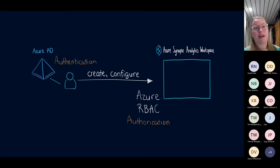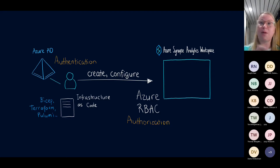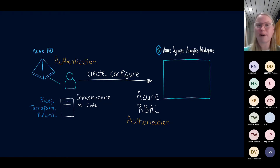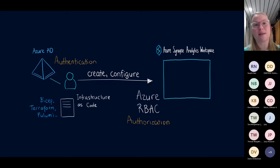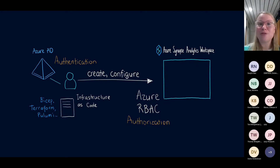The same principles apply if we use infrastructure as code: instead of a user, we could have an application creating and configuring resources. That application identity also has to be found in Azure AD, and then the same authorization process checks whether that application can actually create Azure resources. Once the workspace exists, we then want to start working on data within it — and that is the next step.